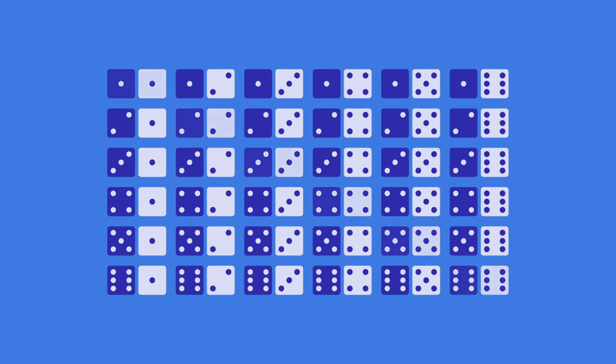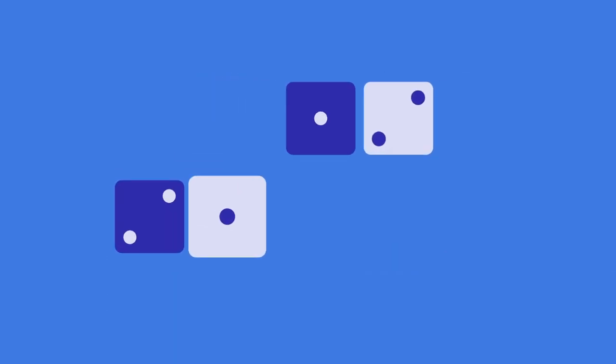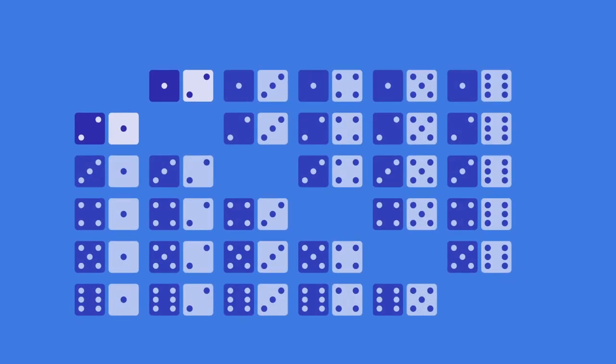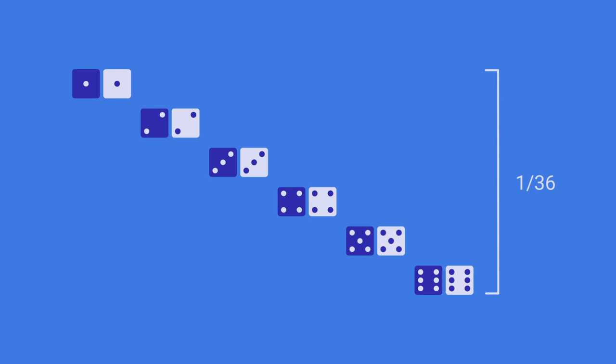In Backgammon, all the non-doubles that share the same numbers are actually the same roll. So 2-1 and 1-2 are two different dice combinations, but in Backgammon, it's the same roll. That leaves us with 15 different non-double rolls, each having a probability of 2 out of 36, and 6 double rolls each with a probability of 1 out of 36, since there is only one combination of a unique double roll.